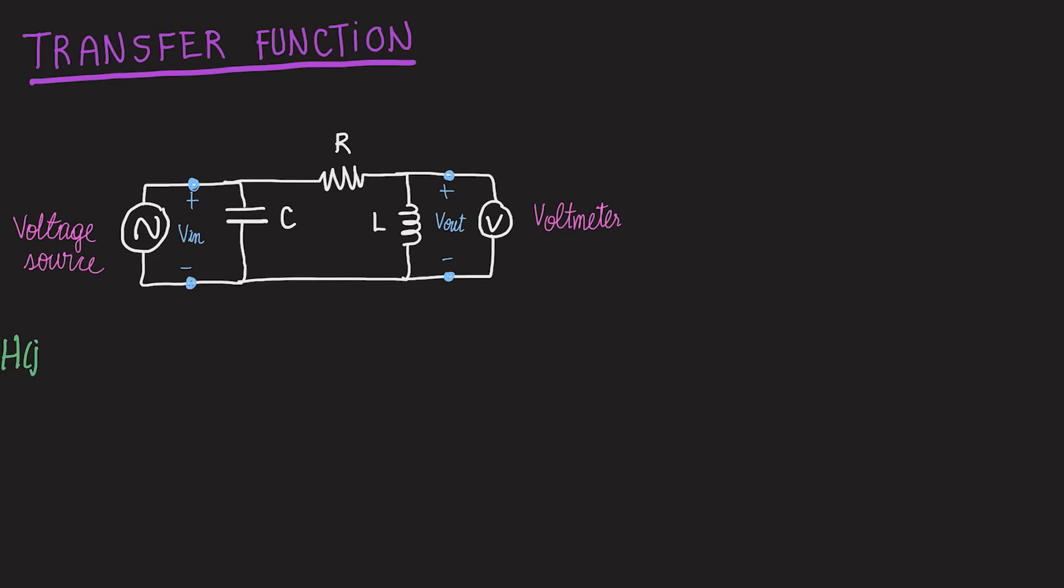In the circuit drawn here, we have a voltage source at the input and a voltmeter at the output. Effectively, we want to find the transfer function, which is defined as the ratio of the output voltage over the input voltage.